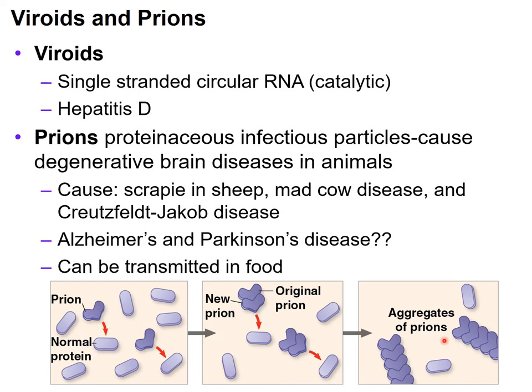In summary, we have viruses in different types and forms, and then we have things that can cause disease but aren't actually viruses. In the case of prions, they don't produce more in the traditional sense, but they can cause more to be formed — prions can enter and convert normal proteins into misfolded prion proteins.